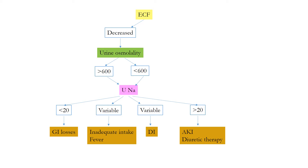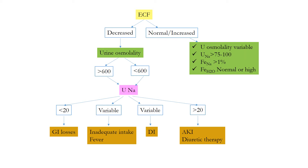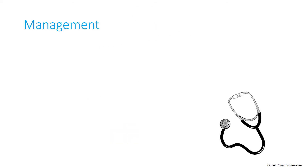In cases of dilute urine with urine sodium more than 20, think of acute kidney injury and diuretic therapy. If ECF volume is normal to increased, urine osmolality can be variable, urine sodium between 75 to 100, fractional excretion of sodium more than 1%, and fractional excretion of water can be normal or high.